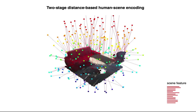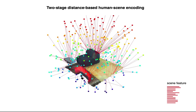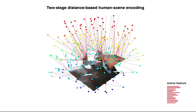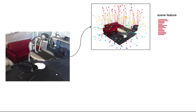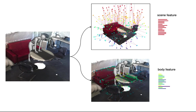The selected vertices on the scene mesh are the scene-bps used to encode the body. For different environments, the BPS in space are fixed, and we have different BPS on the scene meshes. Given the mesh of a scene and body pair, we can compute the scene feature — the distances from the fixed BPS in space to the scene mesh — and the body feature — the distances from the selected scene vertices to the body.